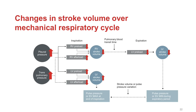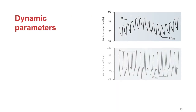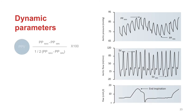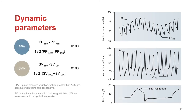Essentially, each mechanical breath behaves like a fluid challenge. Pulse pressure variation is the maximum pulse pressure minus the minimum pulse pressure over a respiratory cycle, divided by the mean. Values greater than 14% are associated with being a fluid responder. Stroke volume variation is a very similar concept — the maximum stroke volume minus the minimum stroke volume over a respiratory cycle, again divided by its mean. Values greater than 12% are associated with being fluid responders.